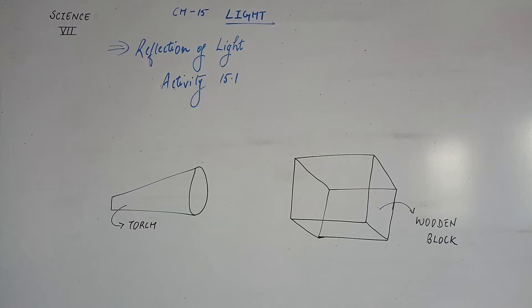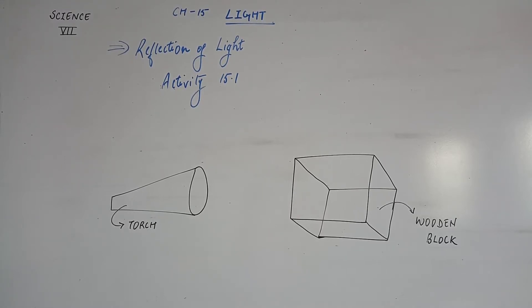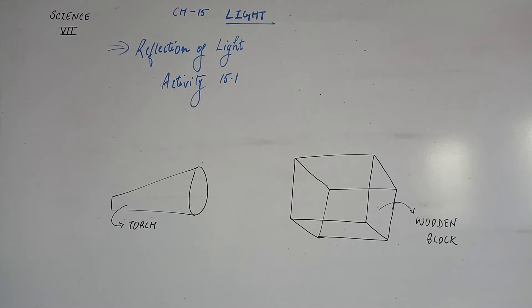Take a torch and cover its glass with a chart paper which has three slits, as shown in the diagram. Spread a sheet of chart paper on a smooth wooden board. Fix a plain mirror strip vertically on the chart paper. Now direct the beam of light on the mirror from the torch with slits. Place the torch so that its light is seen along the chart paper on the board, and adjust its position so that the light from the torch strikes the plain mirror at an angle.